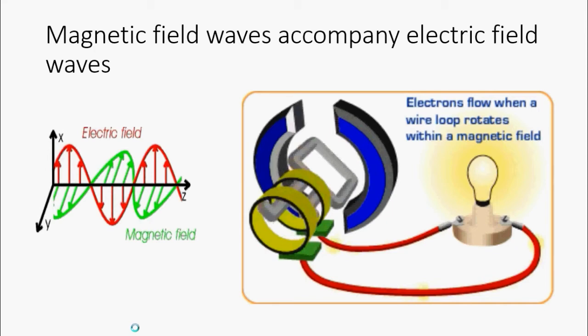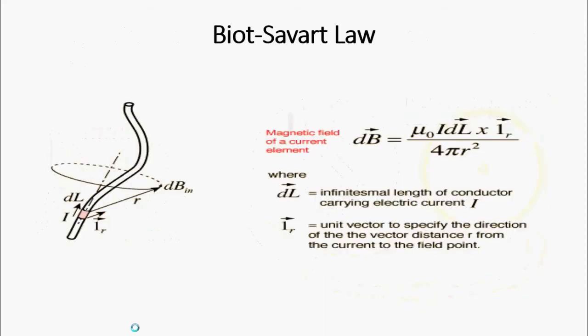If we place a loop of wire and a magnet, the magnetic field lines in combination with the loop wire will produce electricity and light a bulb. The magnetic field and Biot-Savart's law is especially important for electromagnetism.